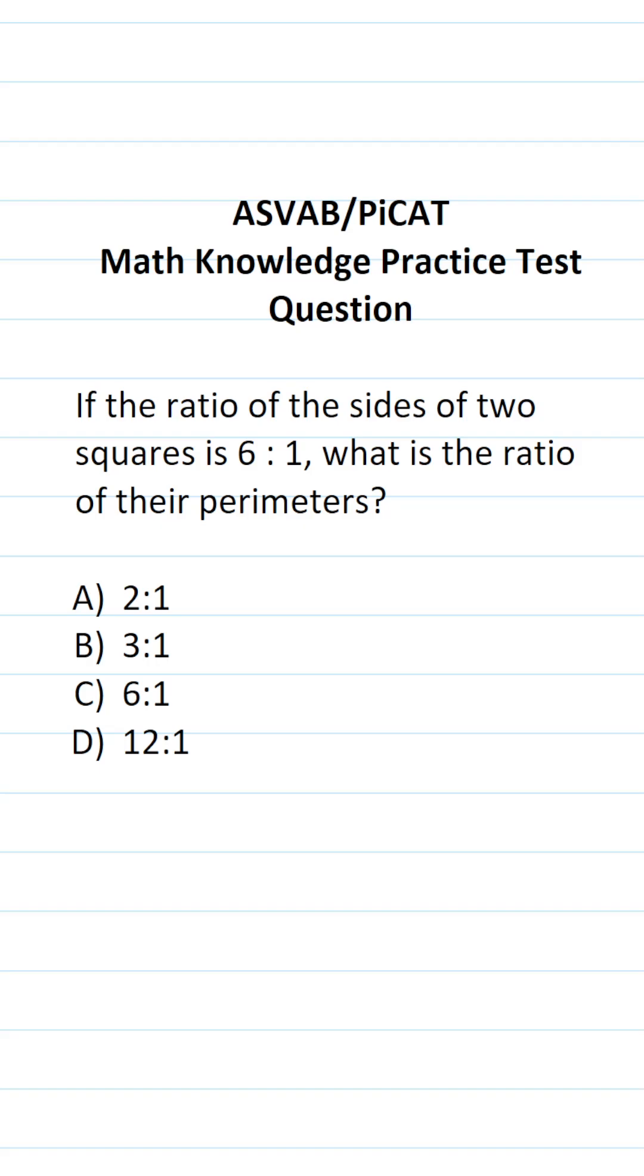Now for this problem, we're talking about the perimeter of two squares, one of which is obviously bigger than the other one. So if it's helpful, you can make a quick sketch of two squares. One thing you should recall about squares is that all their sides are equal, and that's going to be true for both of these squares.